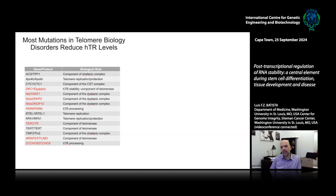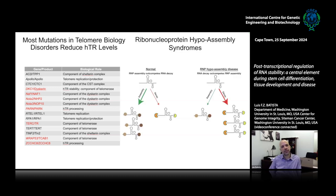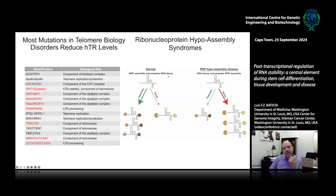Over the last few years, my lab and a couple of other labs have been suggesting that these telomere biology disorders are actually ribonucleoprotein hypo-assembly syndromes. In the normal situation, assembly of the ribonucleoprotein outcompetes the decay of the RNA. In these patients, what happens is that the RNA component of the ribonucleoprotein gets decayed much faster than assembly, so the ribonucleoprotein cannot properly assemble.